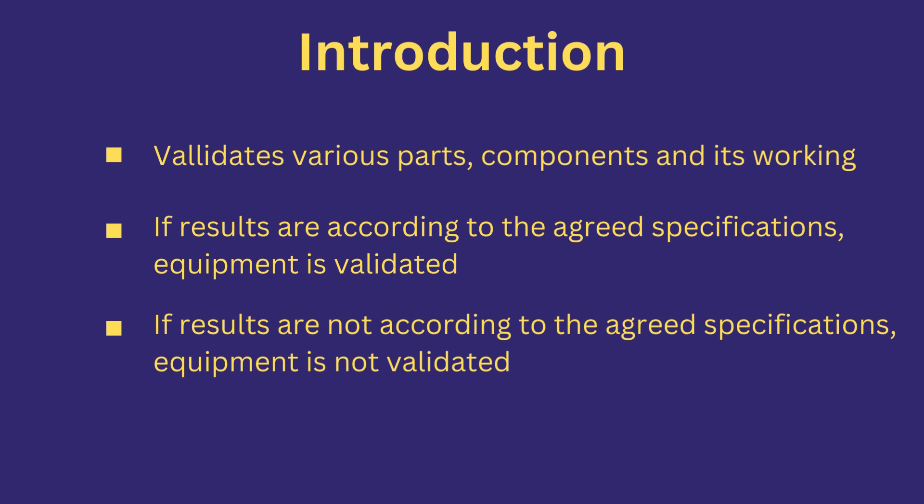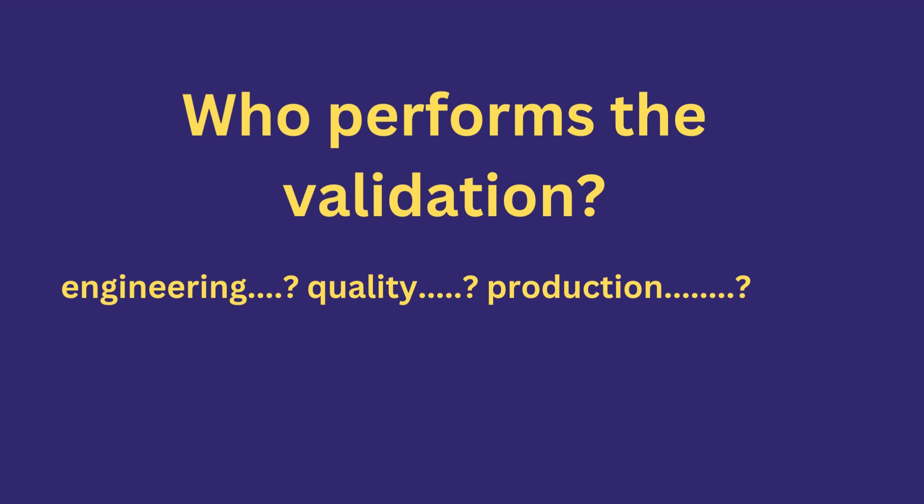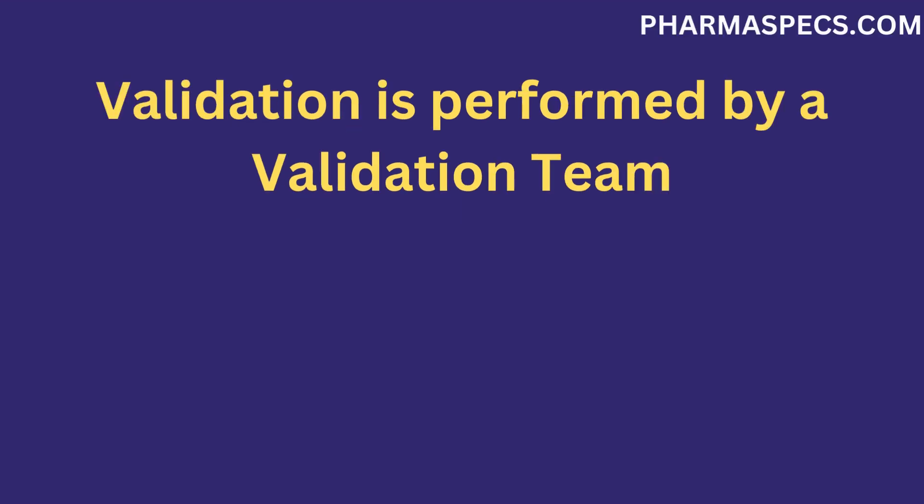Production is only allowed for a validated equipment; otherwise, production is not allowed until equipment is validated. There are various departments in a pharma facility that are directly related to the operation of pharma equipment. Validation is performed by a team comprising personnel from all relevant departments — production, quality, and engineering. Validating equipment is not only related to one department; instead, all three departments are included and each has its own roles and responsibilities.